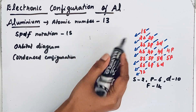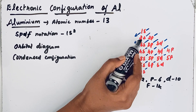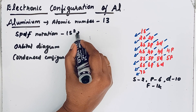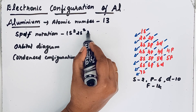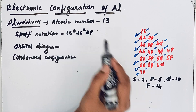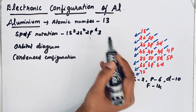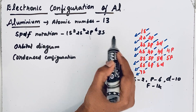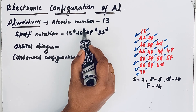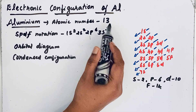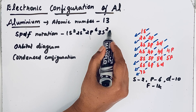Now we can write: 1s² — maximum 2 electrons — then 2s² — maximum 2 electrons — then 2p⁶ — maximum 6 electrons — then 3s² — maximum 2 electrons. Count: 2 plus 2 is 4, plus 6 is 10, plus 2 is 12. We still have 13 electrons, so we write 3p as well.